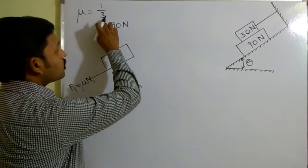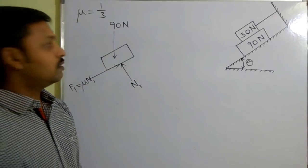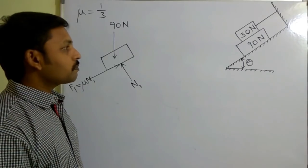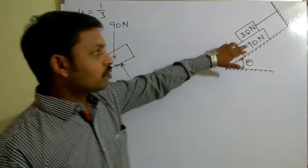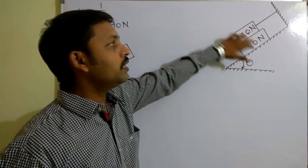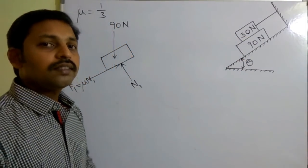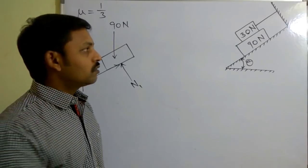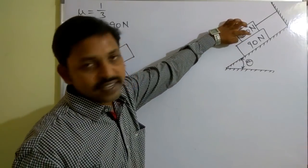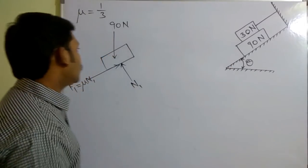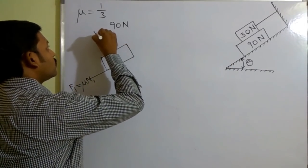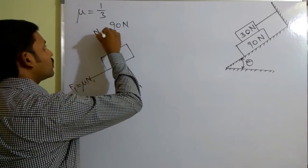Here μ is common for all surfaces and is equal to 1/3. This 90 Newton block is not able to move in the horizontal direction because there is a 30 Newton block. So in the opposite direction, perpendicular to that surface, there will be reaction N2.